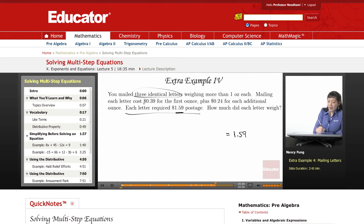And I know that I paid 0.39 for the first ounce, plus 0.24 for each additional ounce. So the flat rate is 0.39, and then there's going to be some additional money. So we're thinking about the ounces.